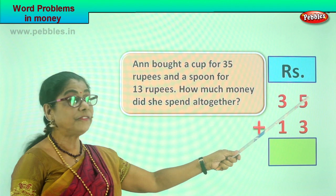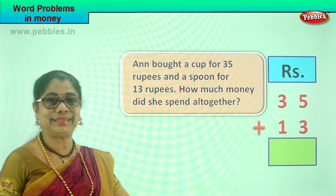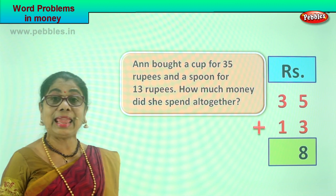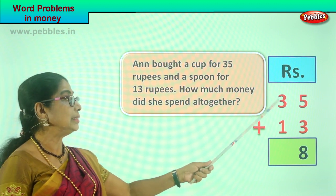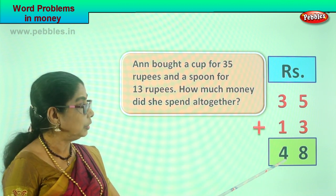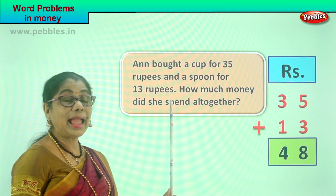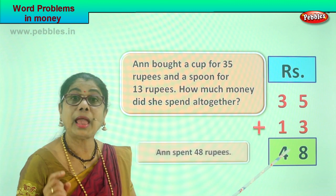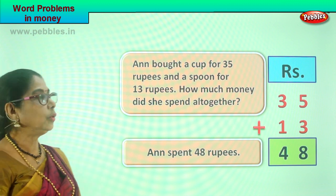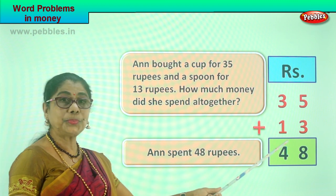What is 5 plus 3? 5 plus 3 is 8. 3 plus 5 is also 8. Let's come to the tens place: 3 plus 1 is 4. So we write 48. How much money did Anne spend all together? Anne spent 48 rupees for a cup and a spoon. What is the total amount spent? Anne spent 48 rupees for a cup and a spoon.